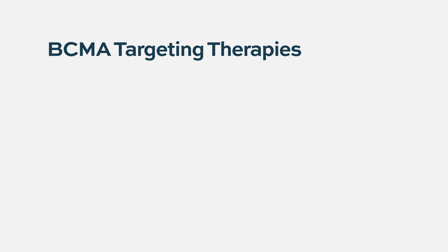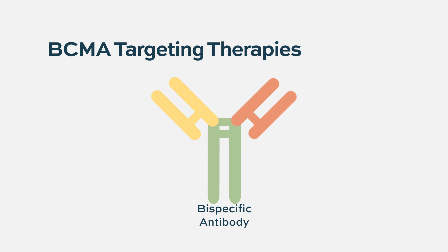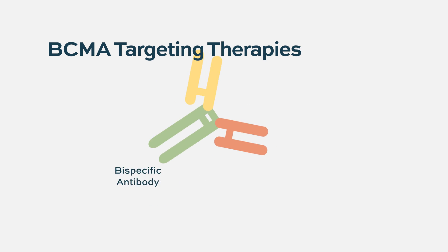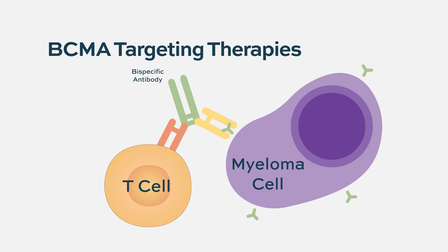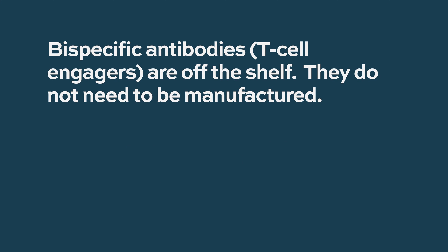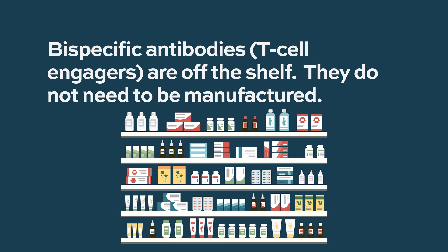The third class of drugs coming soon are bispecific engagers. These drugs basically connect a T-cell, an immune cell, with a myeloma cell. Not all of them are BCMA-directed, but the one farthest along is a drug called teclistimab. These drugs are off the shelf and have very high response rates — not quite as high as CAR-T, but 60 to 70 percent. Some are given intravenously and some subcutaneously.